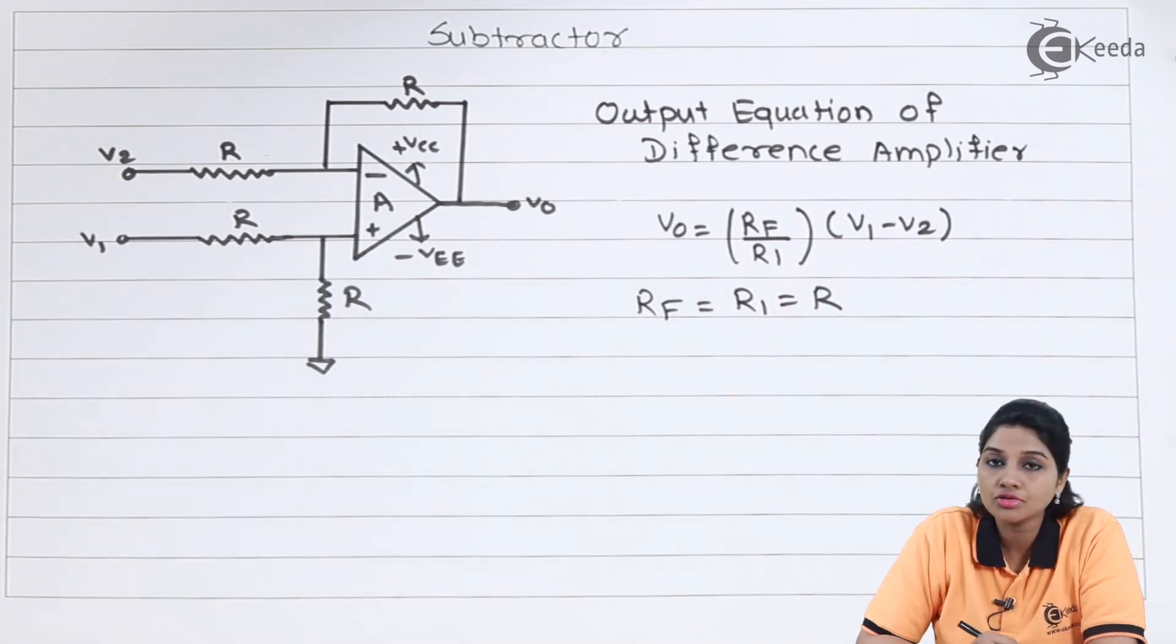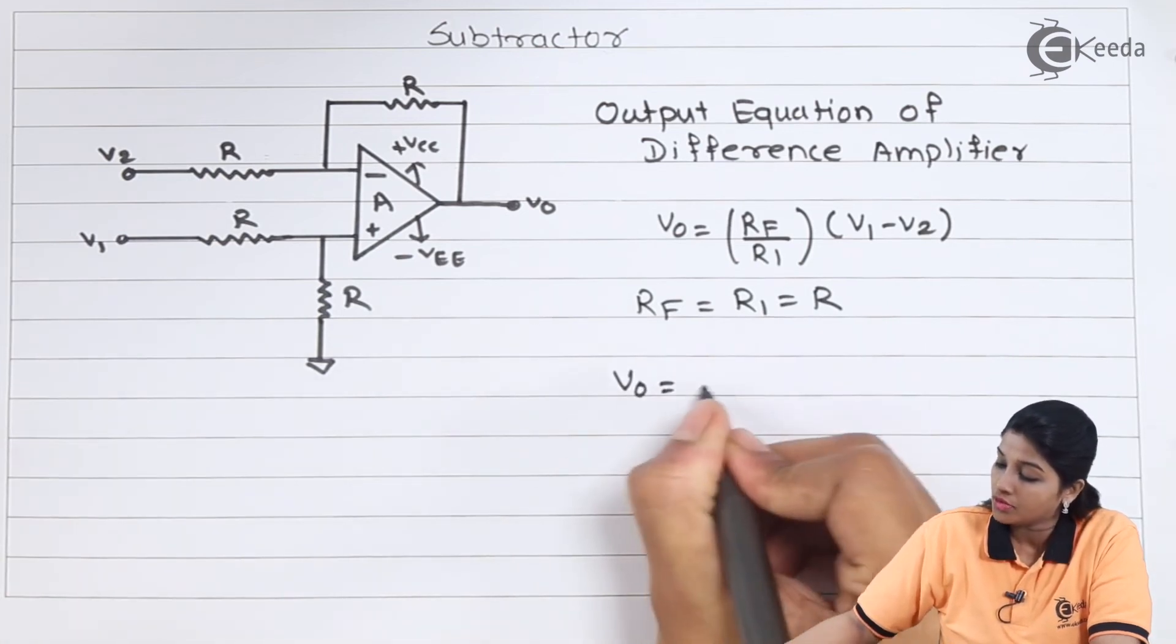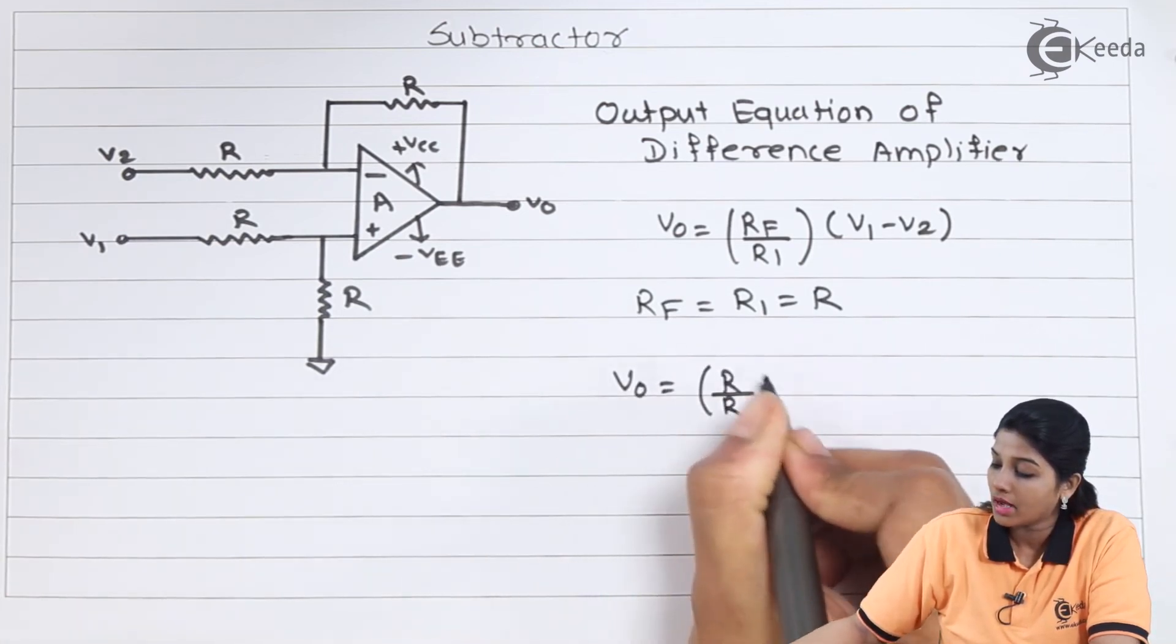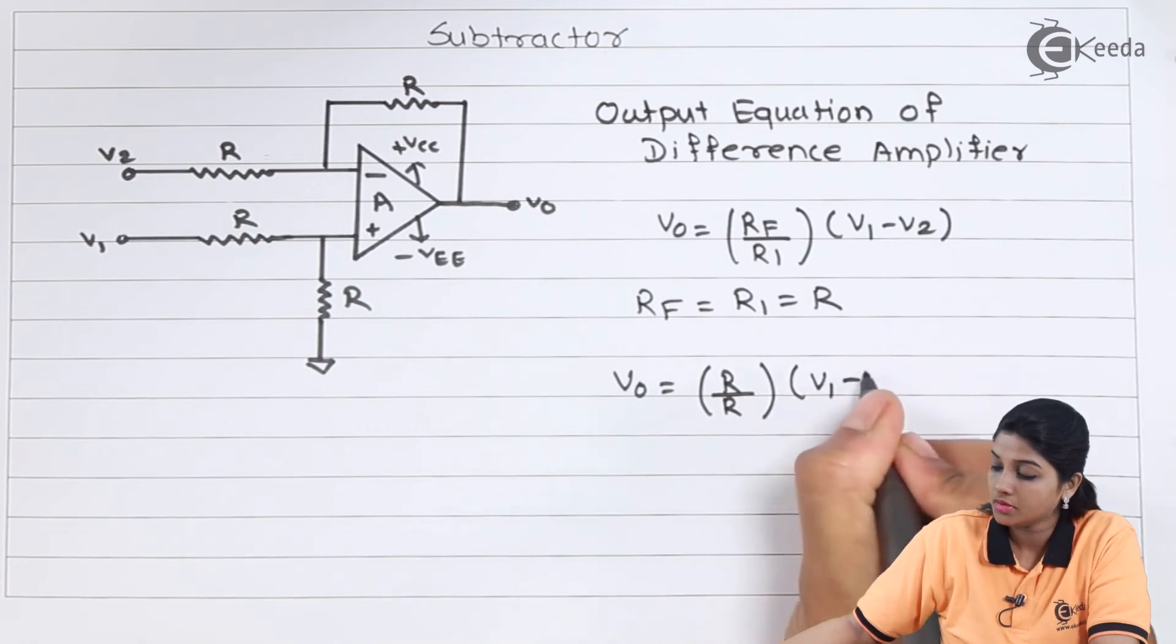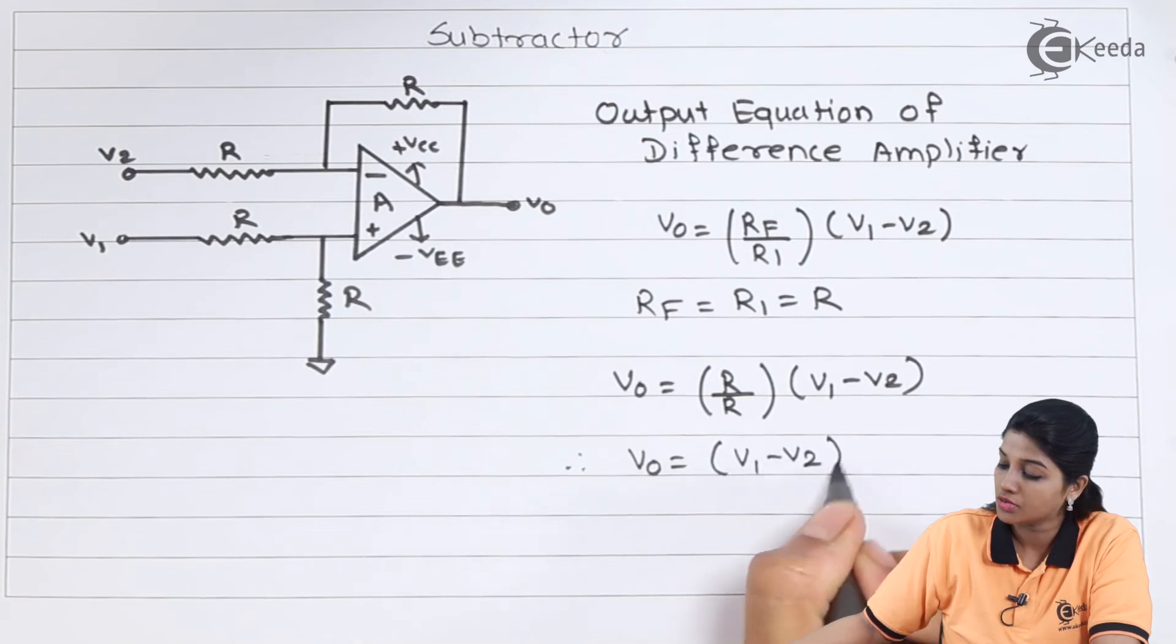So now if we substitute the value of RF and R1, we will get output equation as V0 equals R by R times V1 minus V2. Therefore V0 equals V1 minus V2.